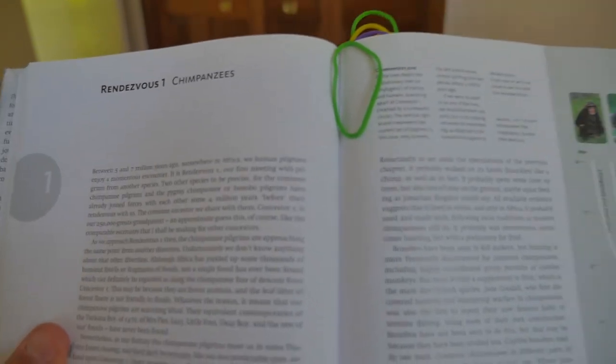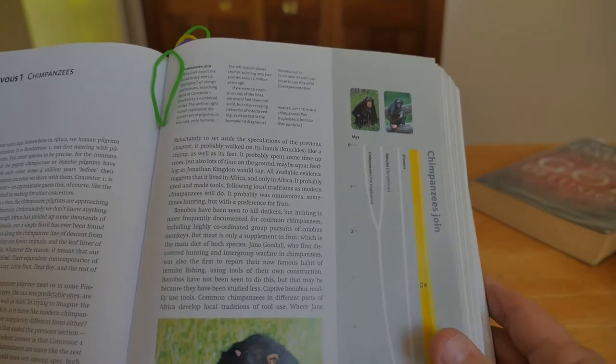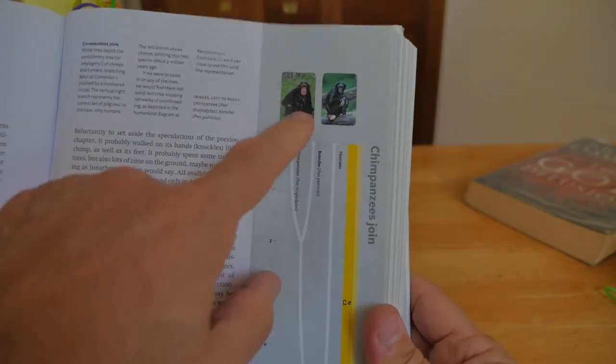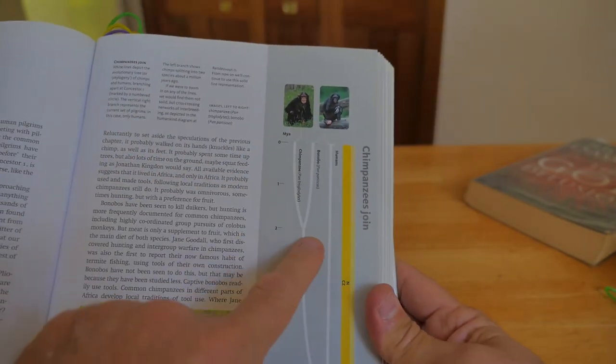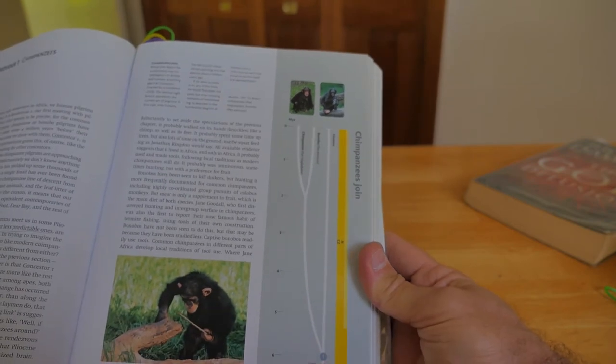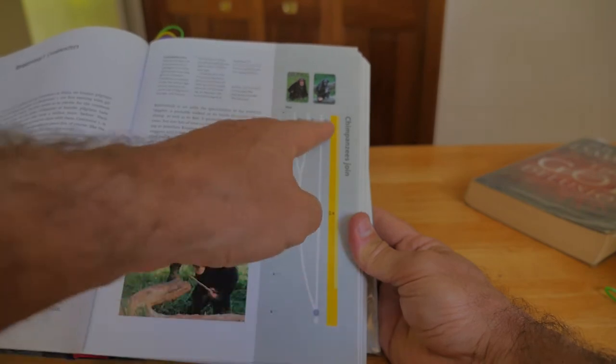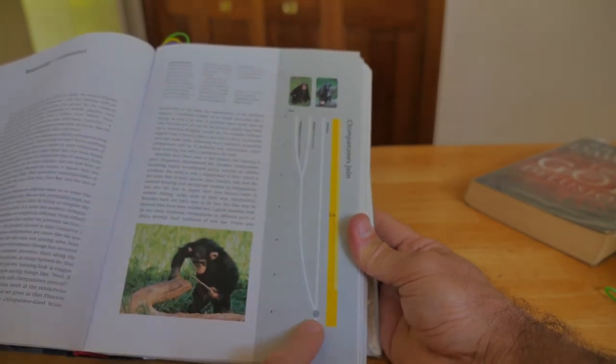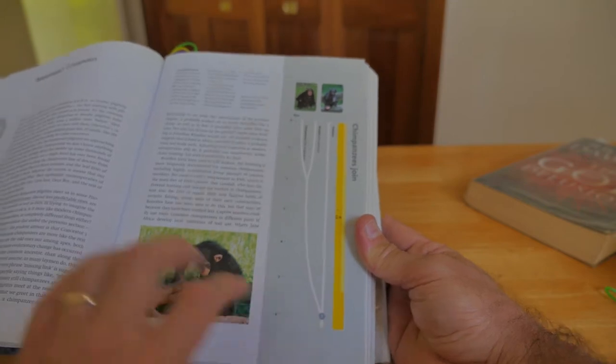This is what he calls rendezvous number one with chimpanzees. He takes us and says, when did we have a common ancestor with chimpanzees? Here are the two chimpanzees, and they had a common ancestor about two million years ago. Down here, about six million years ago, that's when our branch met with the chimpanzee branch. So that's rendezvous one at six million years ago.